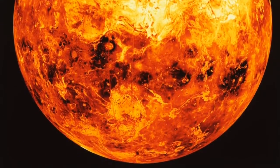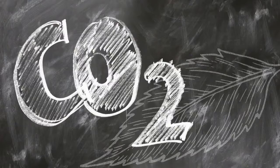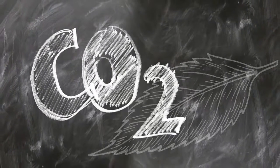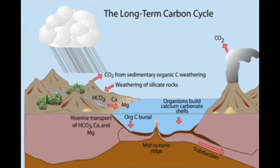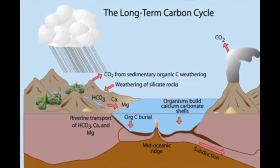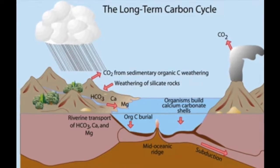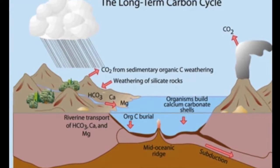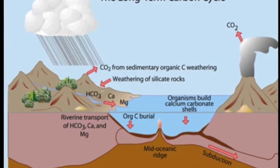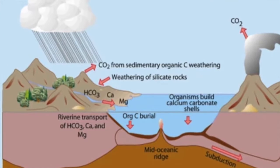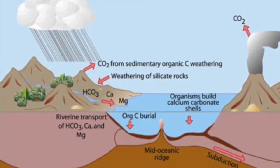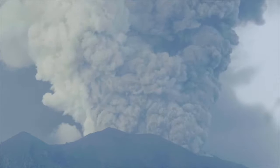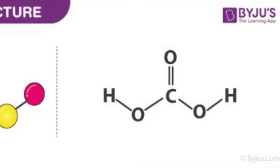Let's break down the carbon cycle into two timelines: the geological cycle and the biological cycle. The geological cycle is a slow process happening over millions of years as carbon moves from rocks and soil into the ocean and then the atmosphere. This happens through a series of chemical reactions and tectonic activity, including volcanic eruptions.